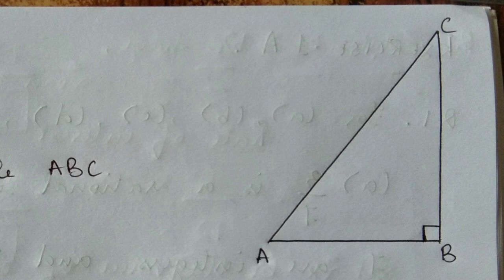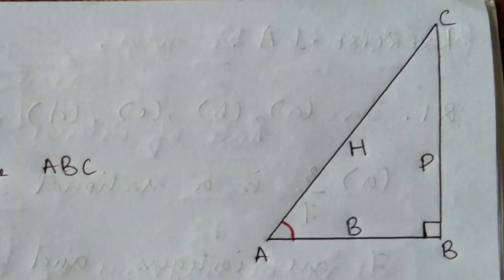Now we need to identify which side is the hypotenuse, which is the base, and which is the perpendicular. The hypotenuse is opposite to the 90 degree angle. So side AC is the hypotenuse. For angle A, side AB is the base and side BC is the perpendicular.